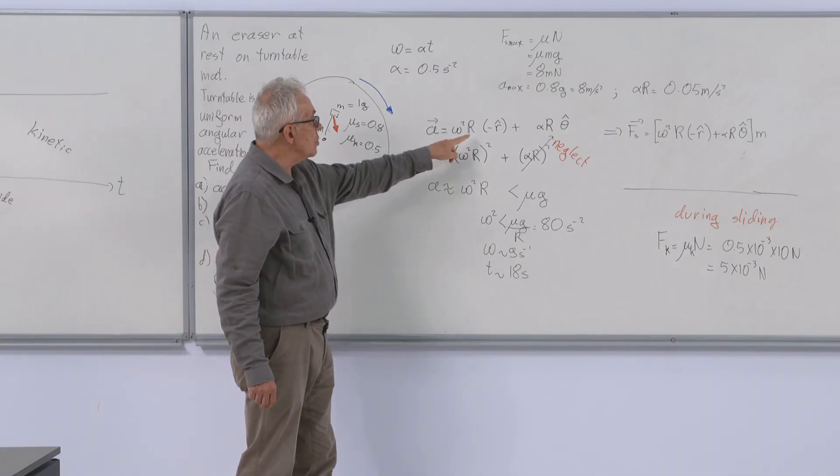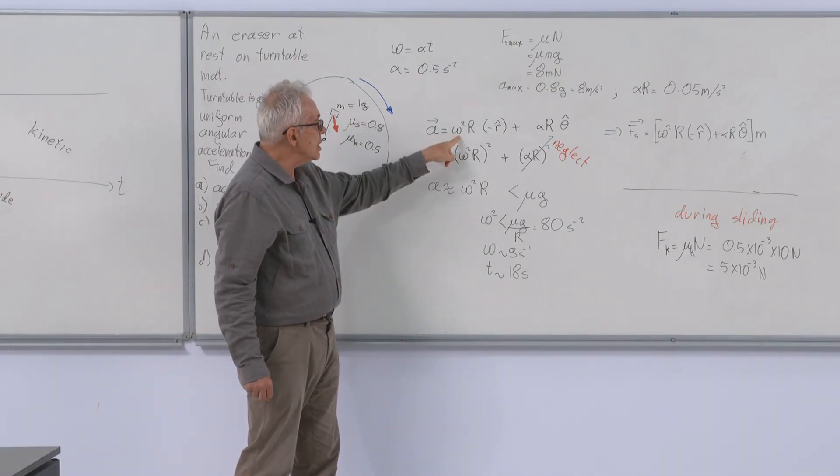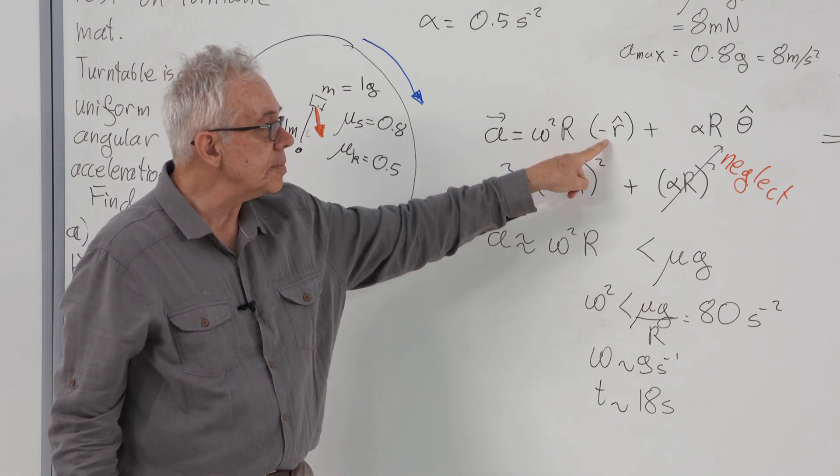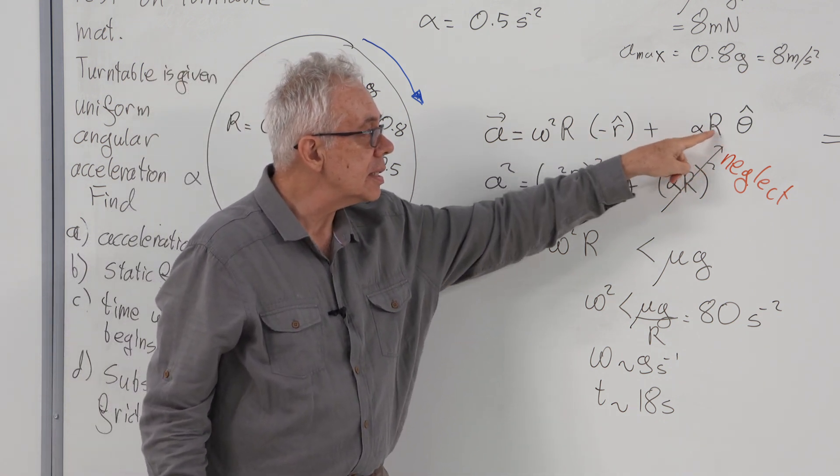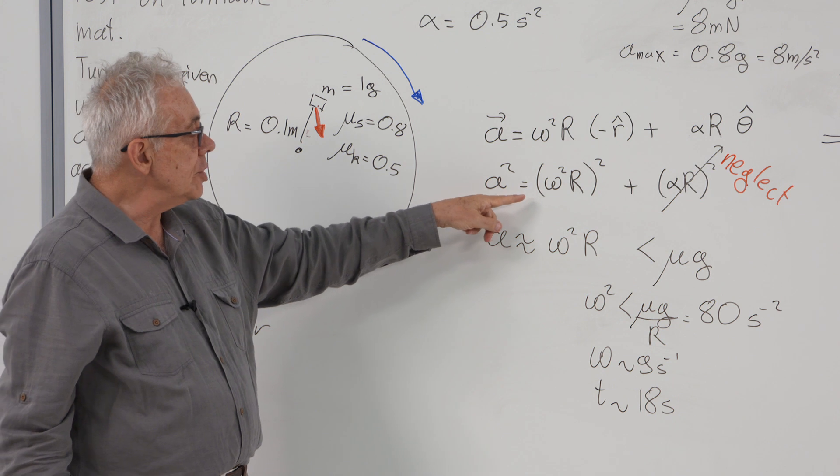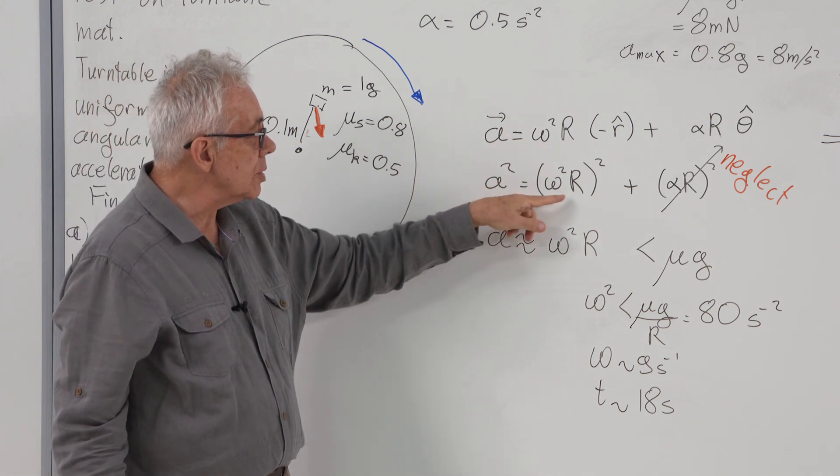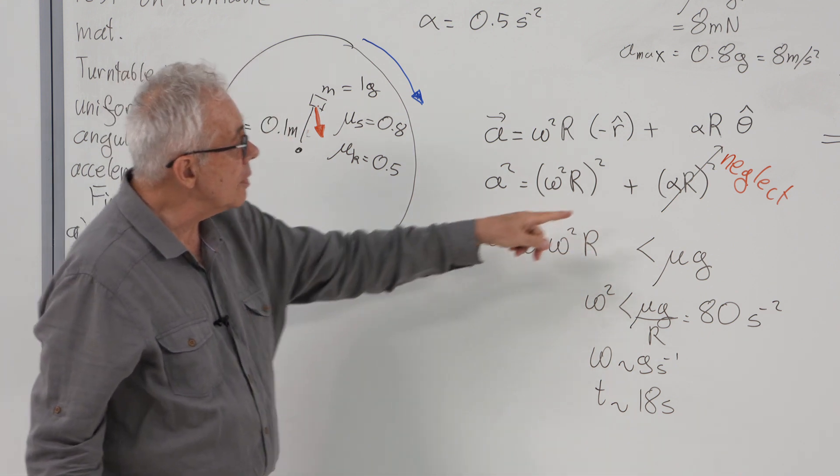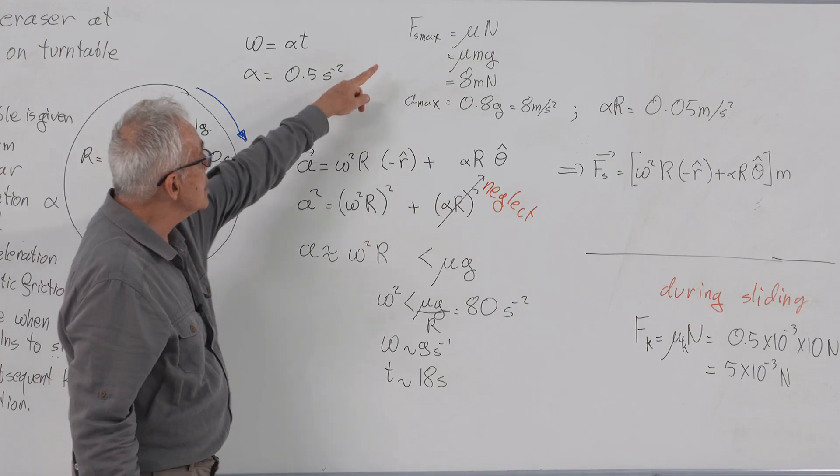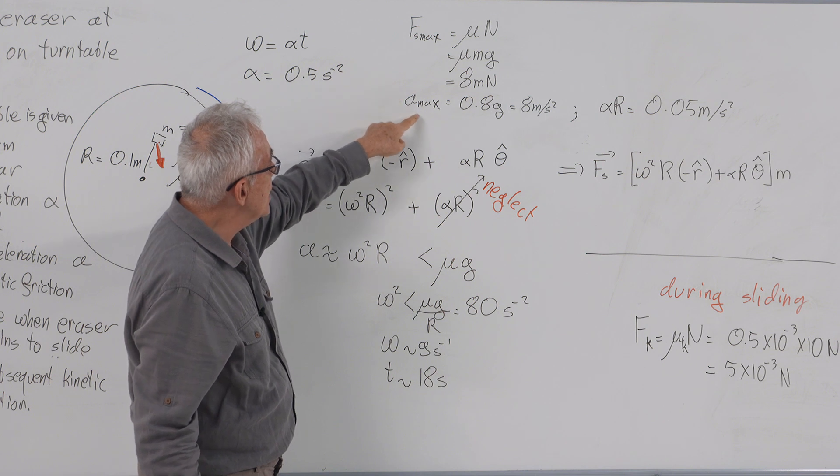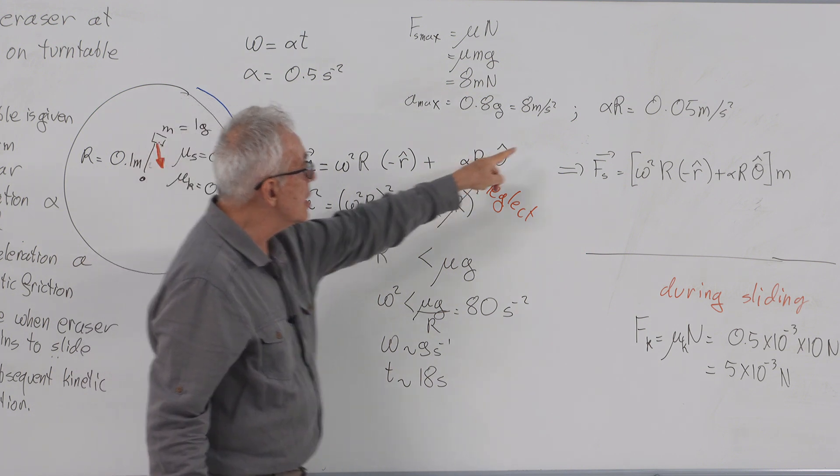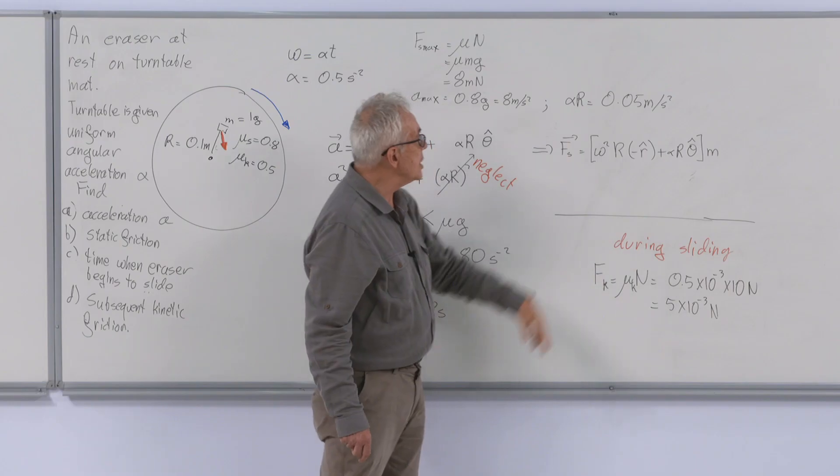So the acceleration of the eraser is the centripetal acceleration, v squared over r, which is equal to omega square r in the centripetal direction, plus the tangential acceleration, of course, in the tangential direction. The magnitude is the sum of the squares of these. Now, we will note that this term is very small, except very early in the problem. That is because when it starts sliding, the maximum acceleration is about 0.8 g, and alpha r is 0.05 meters per second square. And this is so much smaller than that that the square is completely negligible.